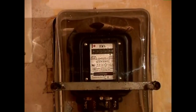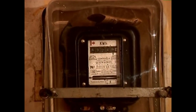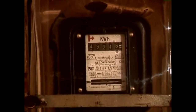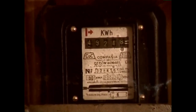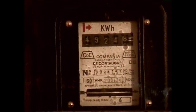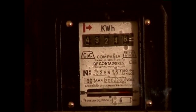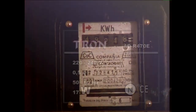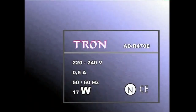Tresna elektrikoak kontsumitzen duen energia elektrikoari potentzia deritzo. Potentzia unitatea watta da, eta tresna elektrikoen ezaugarrien plaketan W izkiaz adierazten da.